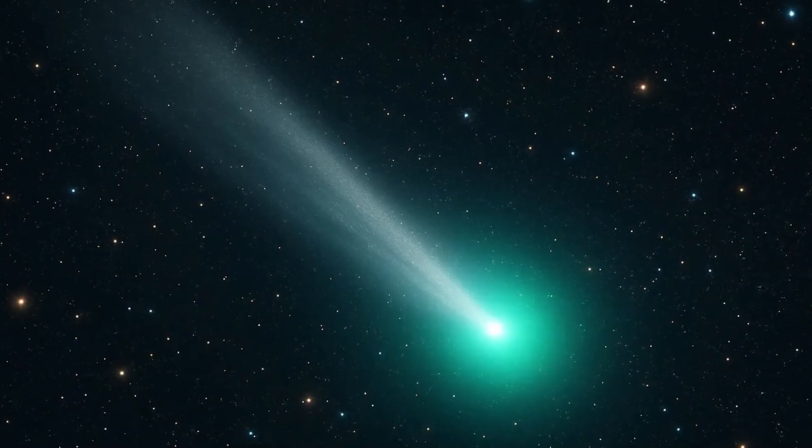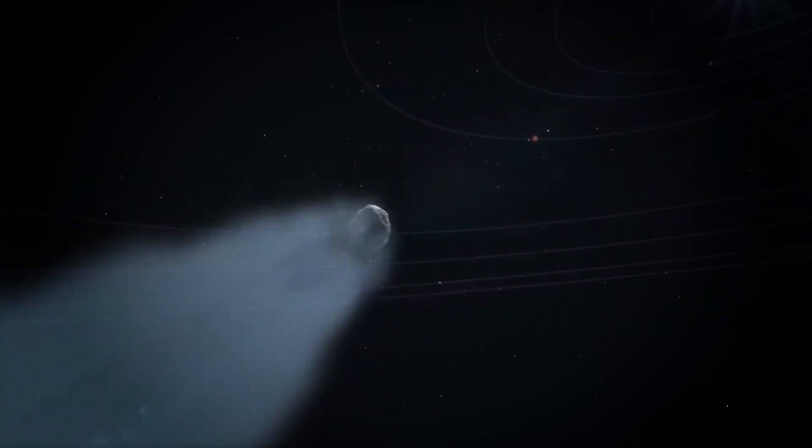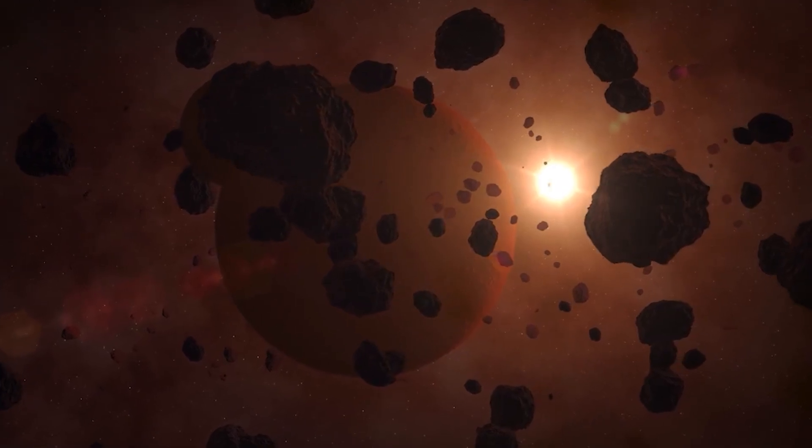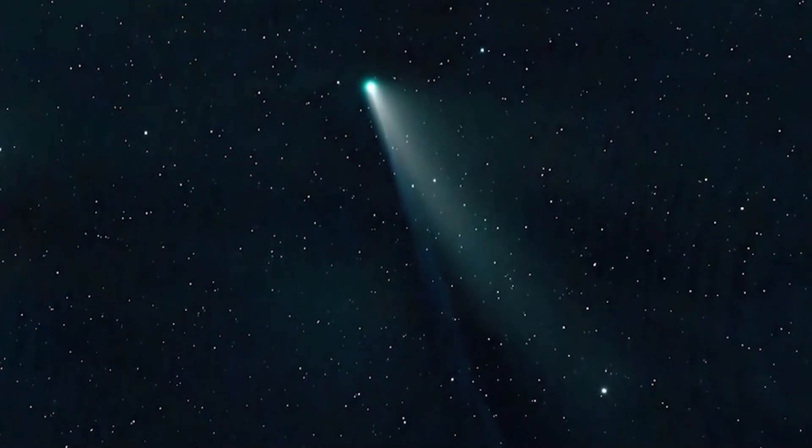Comets are supposed to have comas and tails. That's normal. As they approach the sun, ice on their surface turns directly into gas, throwing dust and debris into space.